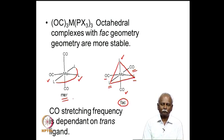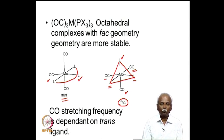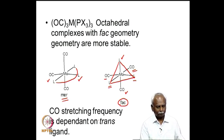We now have two situations: both in the disubstituted and trisubstituted cases we see a clear preference for the ligand L to be trans to a carbon monoxide. This electronic preference needs to be explained in order for us to understand why L prefers this geometry.